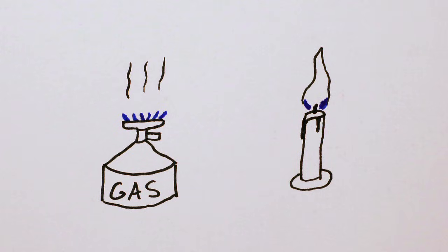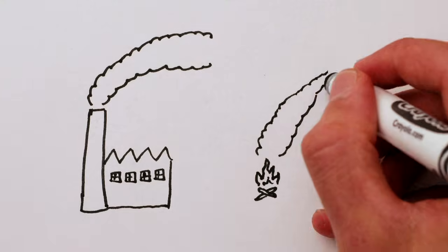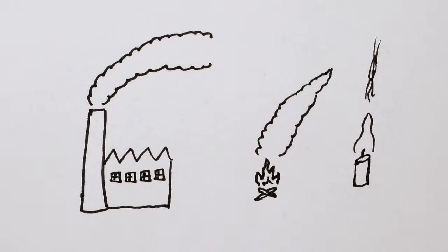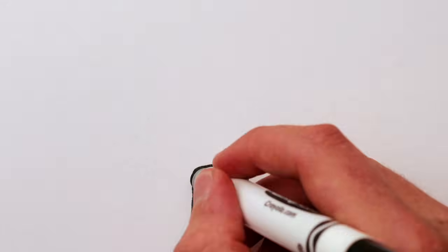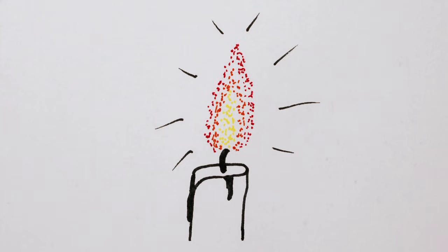Now, when the fuel isn't as pure and doesn't entirely burn, like wood fire, coal fire, or the top of a candle flame, there's still some blue light, but you don't see it because it's overpowered by light from all the particles of soot and smoke. They're glowing red hot.